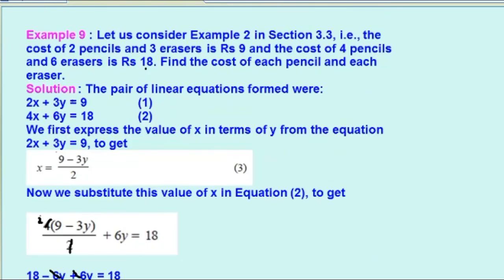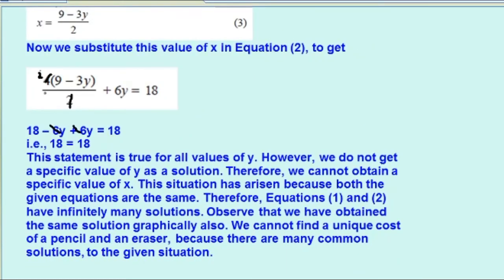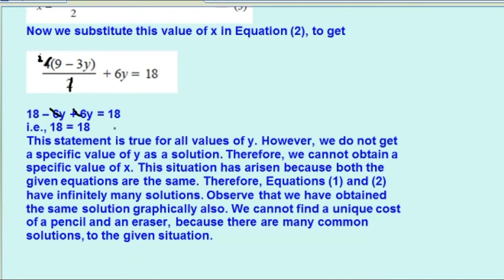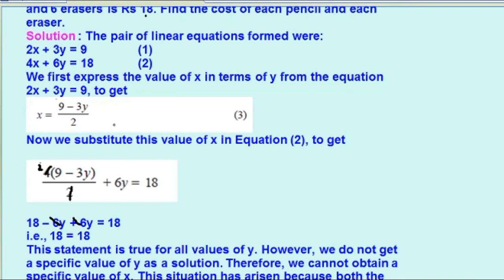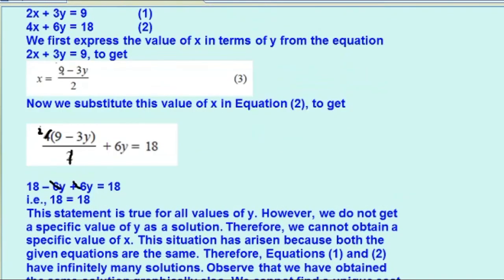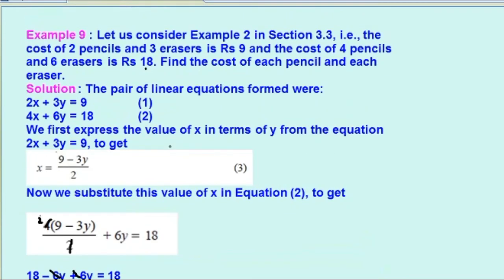यह क्यों हो रहा है? क्योंकि दोनो equations same हैं. अगर equation 2 को 2 से divide कर लें, तो 4 के जगा 2 बन जाएगा, 6 के जगा 3 बन जाएगा, और 18 के जगा 9 बन जाएगा. यह दोनो lines एक के उपर एक आ रहे हैं. इसलिए any value of x and y will satisfy both equations, क्योंकि दोनो equations are almost same.